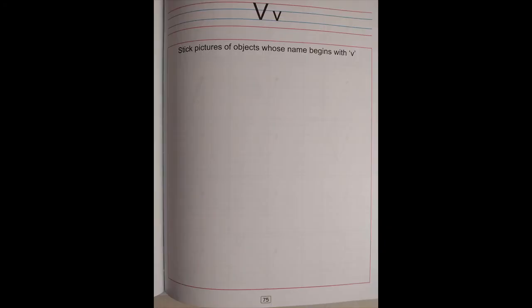Are we ready for the home fun activity? For this, you have to open your English pencil time book to page number 75. Children, I'm very sure that you are able to open to the page on your own independently now. Dear parents, kindly assist the child in writing today's date on top of the page. On this page, you have to stick pictures of objects whose names begin with V. I hope this activity was clear.